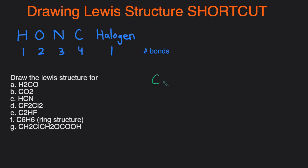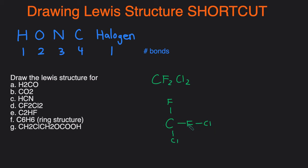Next one, CF2Cl2. Again, carbon is in the middle, and we have fluorine and chlorine, which are halogens. Halogens like to form 1 bond, so we're going to single bond the Fs and Cls to the carbon, so that the carbon can have 4 bonds. If we tried another arrangement, the carbon would only have 3 bonds and we'd be making the halogen form 2 bonds — but they only want 1 bond. So we keep the arrangement where each halogen is singly bonded to carbon. Then the last thing is to add lone pairs so all atoms have an octet — we add 3 lone pairs to each of the halogens so they each have 8 electrons.